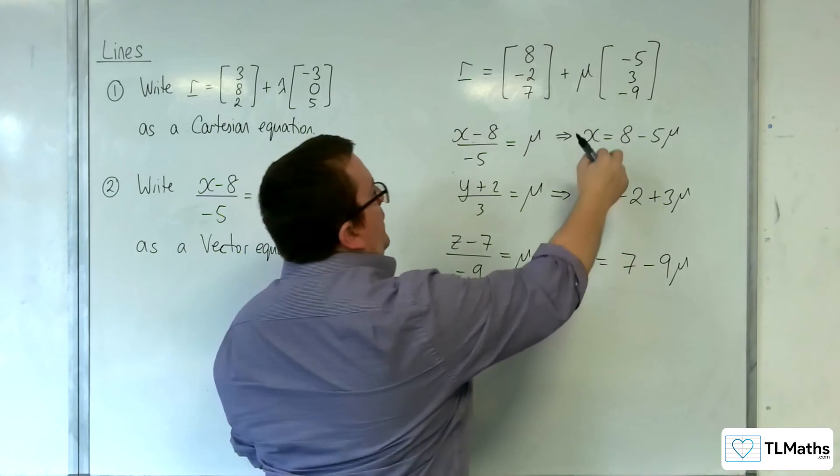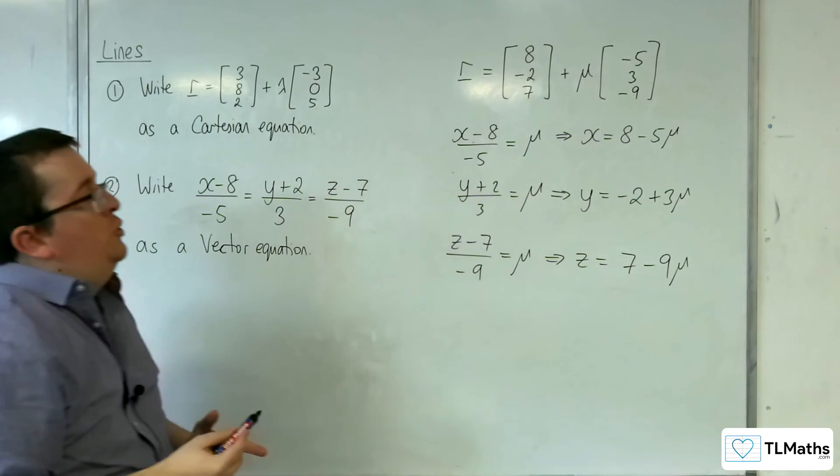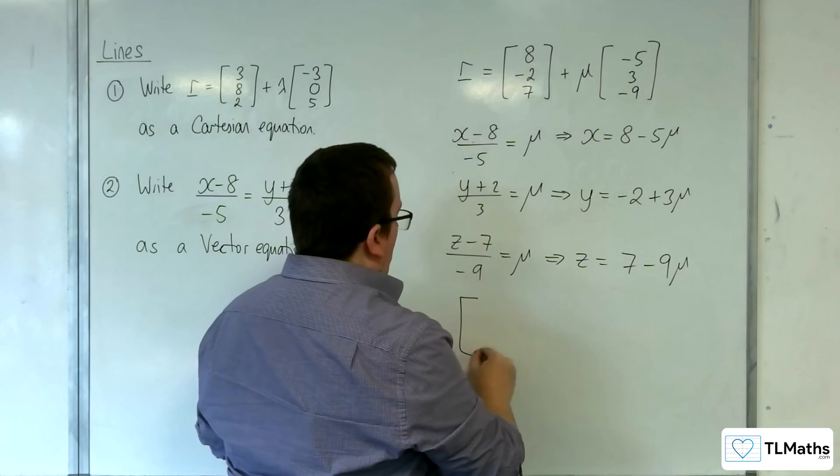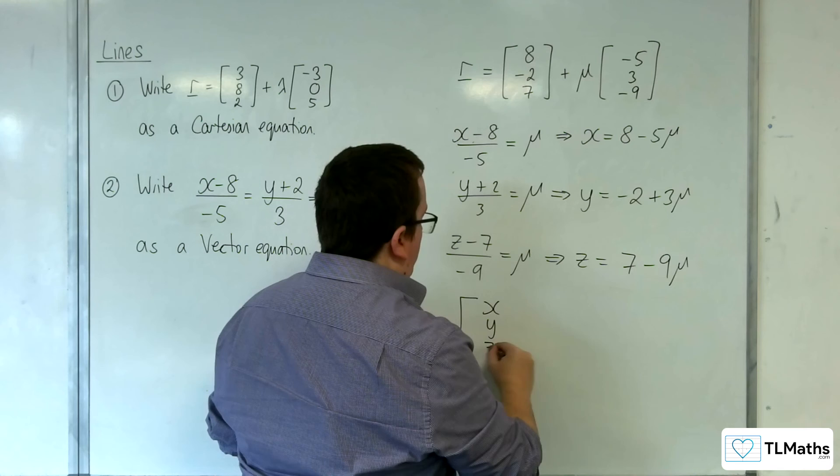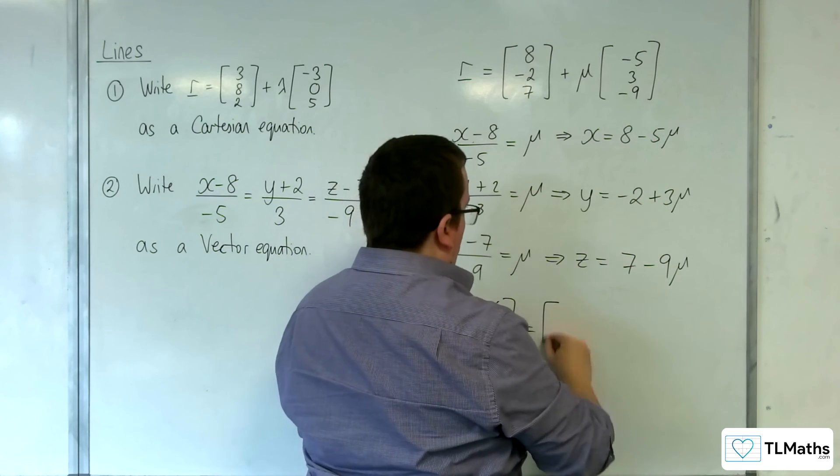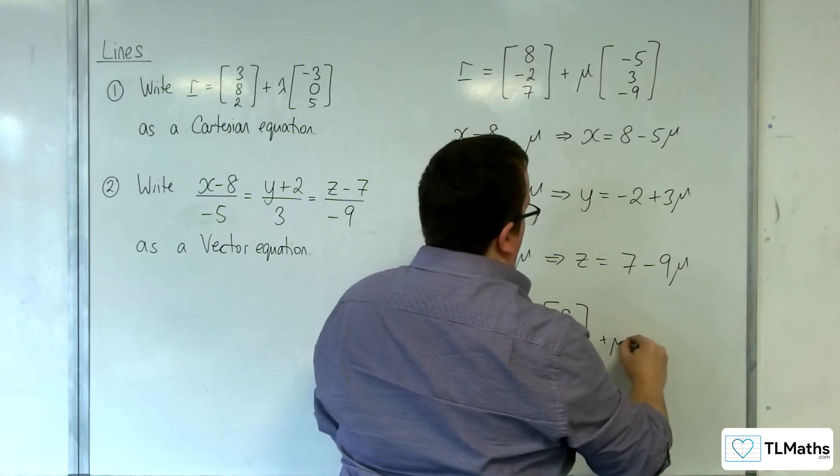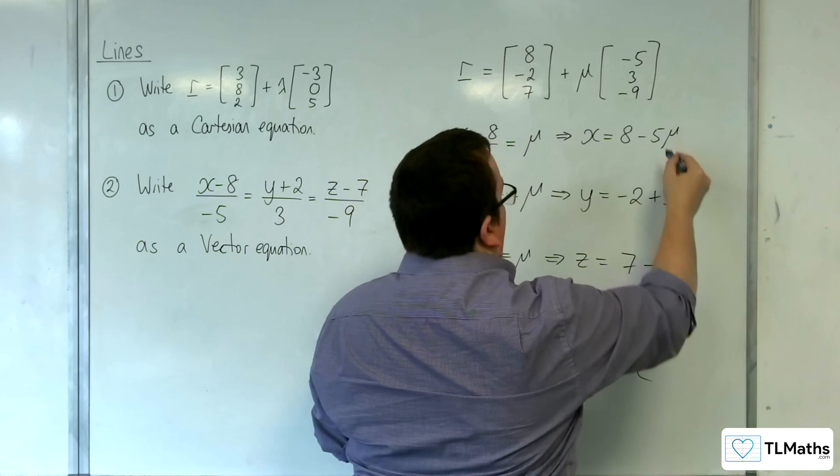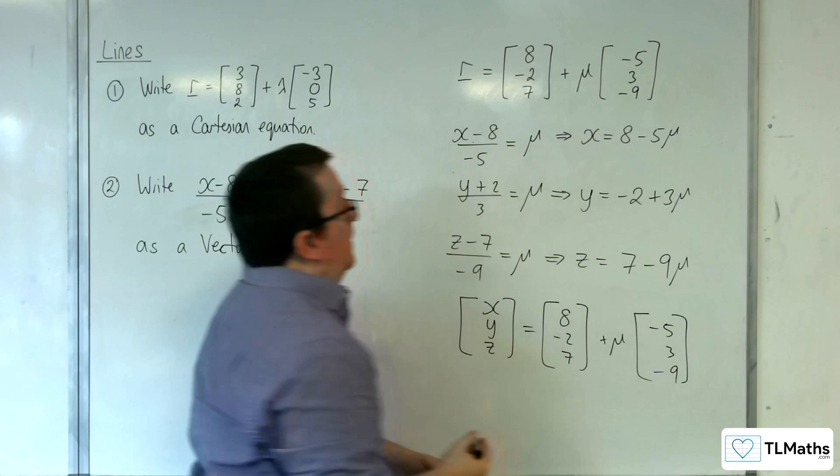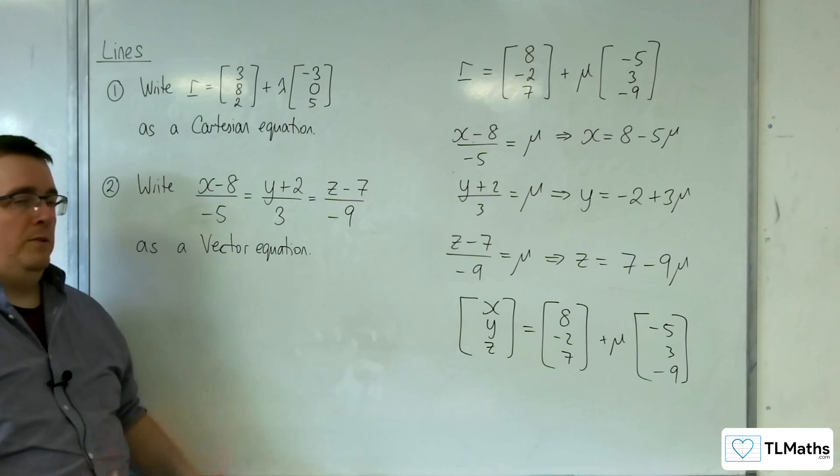And you can see that this is the top, middle and bottom row of this equation. Okay, so x, y, z is equal to this, this, this. So 8 minus 2, 7 plus mu minus 5, 3 minus 9. Okay, so that is how you can convert between the two.